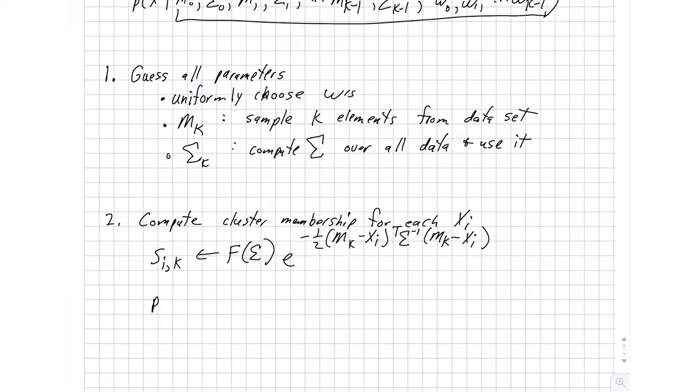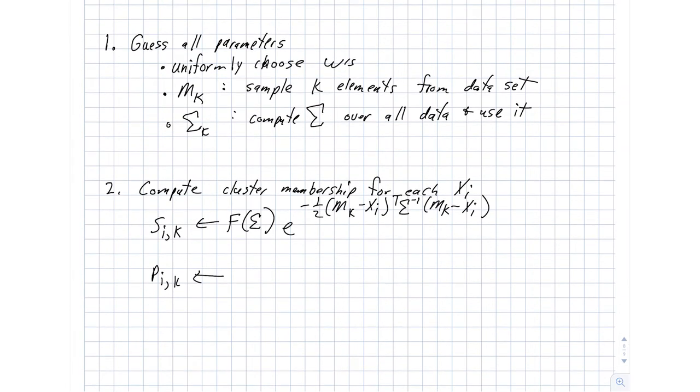And then we're going to compute our probabilities. So probability of sample i being in class k, we're just going to assign that to be equal to the weight of class k times our score. And then that is divided by, I'm going to iterate over all of the classes, we'll call those j's, and that's w_j s_ij. So again, we're in this situation where if we were to sum up all of our p_ik's over all possible k's, then those equal to one.